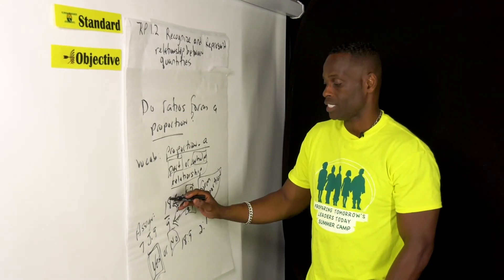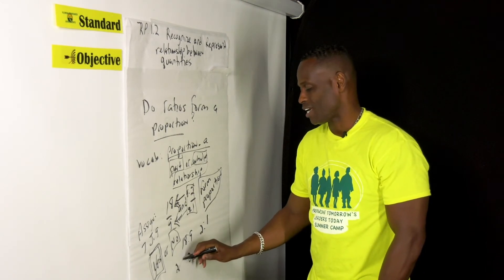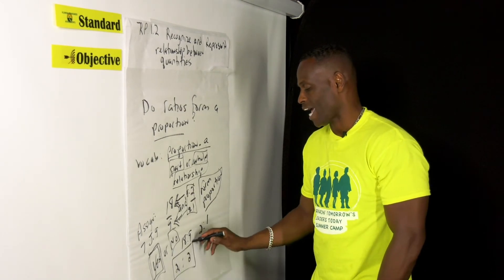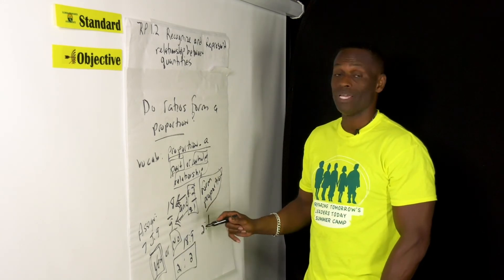So actually this represents the same number that this represents. This represents 9 goes into 18 two times, 1 goes into 2 two times. So both of these are actually basically saying the exact same thing. That's what makes them equivalent.